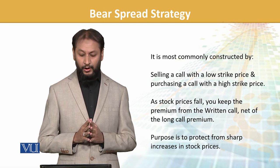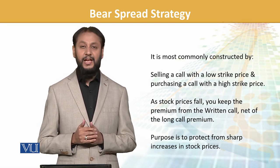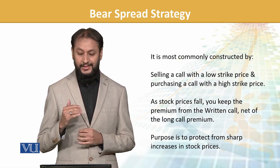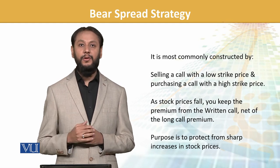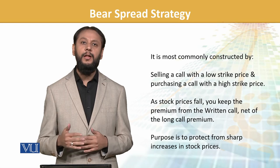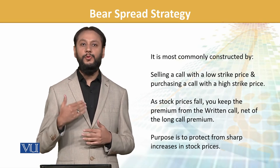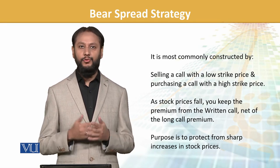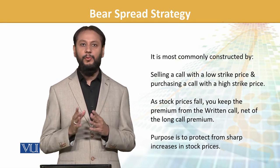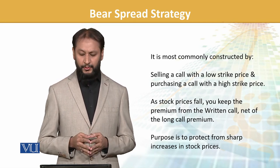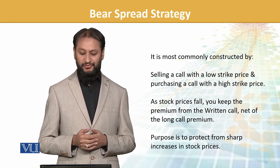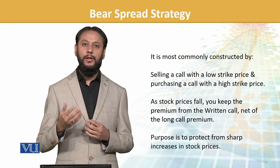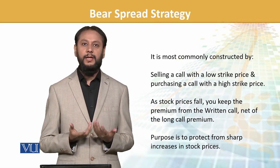It is most commonly constructed by selling a call with a low strike price and purchasing a call with a high strike price. We will be doing more figures and illustrations to clarify this further. For a stock price fall, you keep the premium from the written call, net of the long call premium you paid, and you gain the net amount out of it.